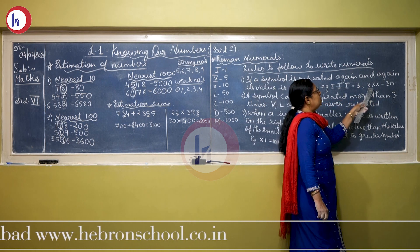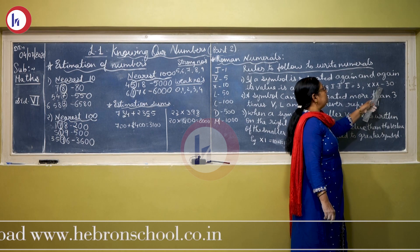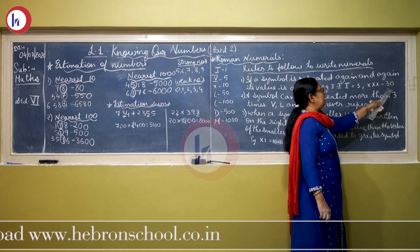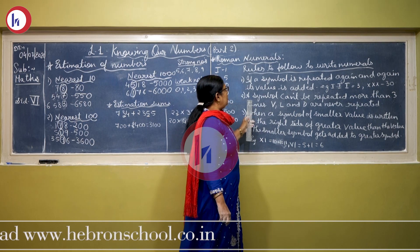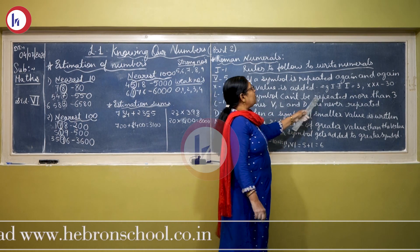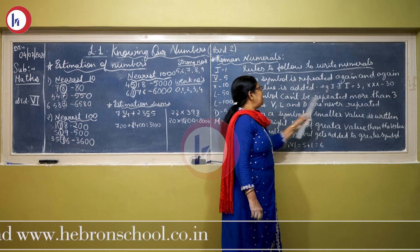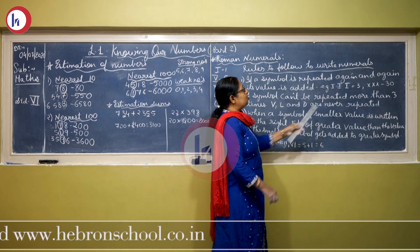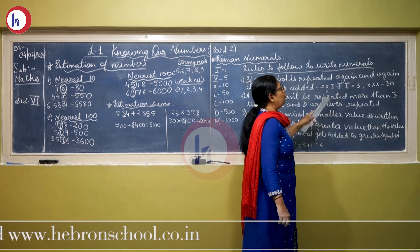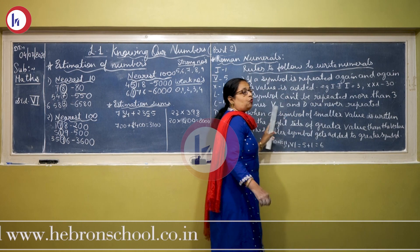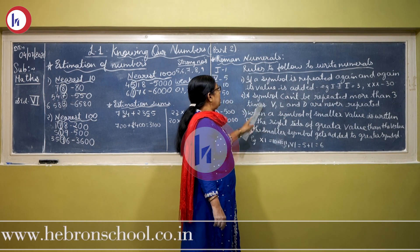Same way, X repeated 3 times: 10 plus 10 plus 10 is 30. The second rule is: a symbol cannot be repeated more than 3 times. Also, the symbols V, L, and D can never be repeated.